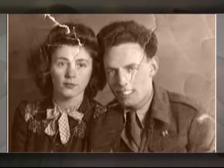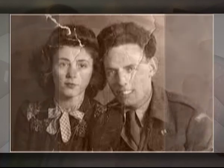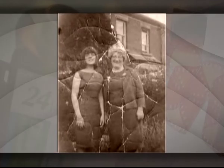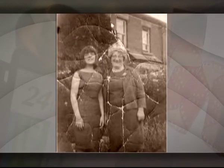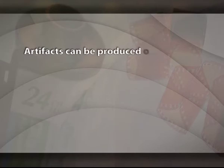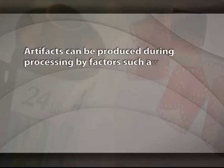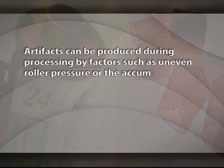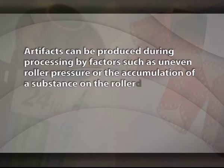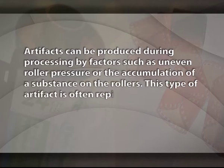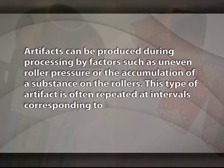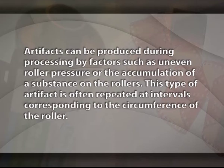Artifacts. A variety of artifacts can be produced during the storage, handling, and processing of film. Bending unprocessed film can produce artifacts or kink marks, which can appear as either dark or light areas in the processed image. Artifacts can be produced during processing by factors such as uneven roller pressure or the accumulation of a substance on the rollers. This type of artifact is often repeated at intervals corresponding to the circumference of the roller.